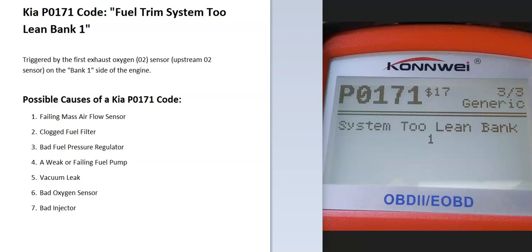Today I'm talking about a Kia with the P0171 code — what it is and how you go about fixing it. A Kia P0171 code is a fuel trim system too lean, bank 1. Basically, the onboard computer is seeing a problem with the air-fuel ratio mixture going into the engine — mainly, it's seeing too much oxygen and not enough fuel, so it's throwing out this code. This code can be a little problematic since it could be caused by a few different things.